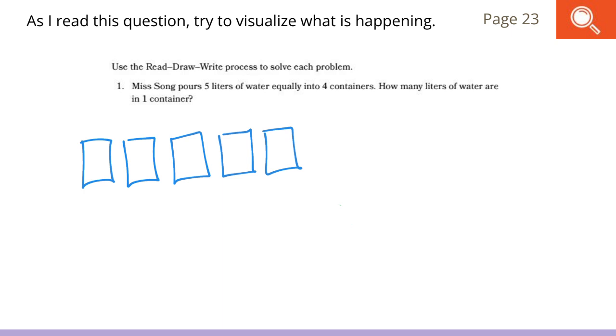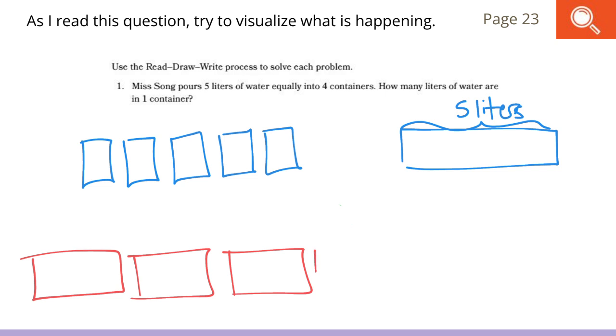On the left-hand side, I'm going to show a model. On the right-hand side, I'm going to show a tape diagram. So, I know that I have 5 liters. 5 liters on the left and 5 liters labeled on the right. We're sharing that, or pouring that equally into 4 containers. 1, 2, 3, and 4. We have 4 containers there.